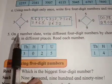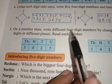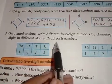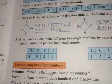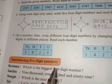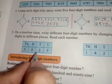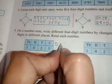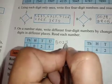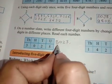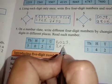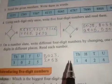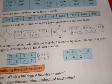The next exercise: on a number slate, write different four-digit numbers by changing one digit in different places, and read each number. For example, convert this number — like 3200, 5022, 3205. Convert this number; this is also homework for you. We will stop here — thank you.